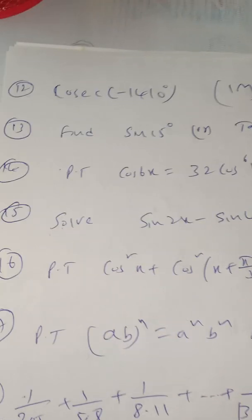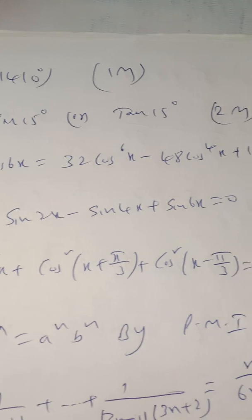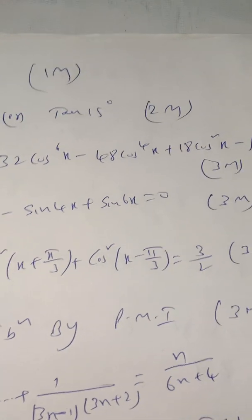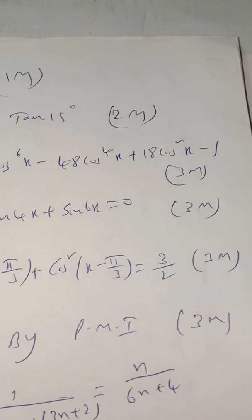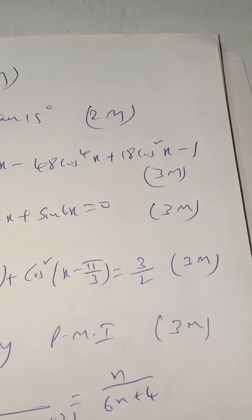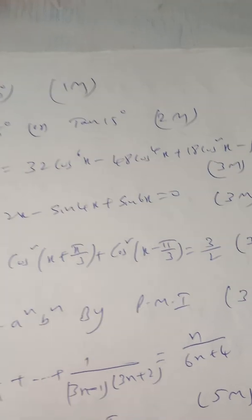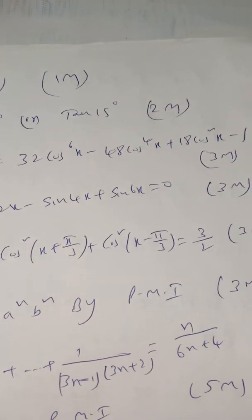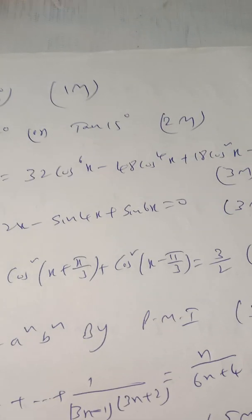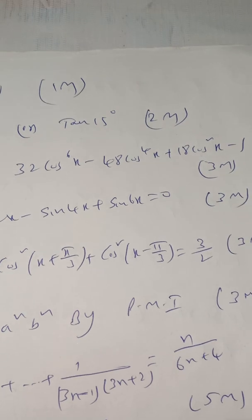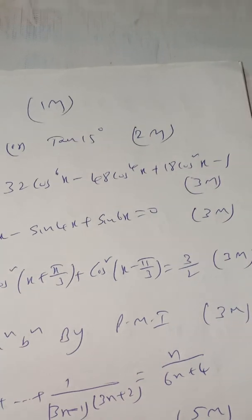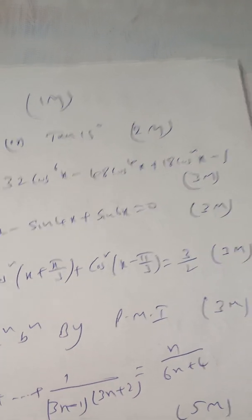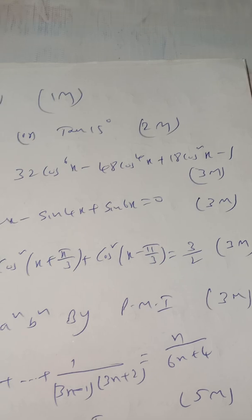Another 3-mark question in trigonometry: prove that cos 6x = 32cos⁶x − 48cos⁴x + 18cos²x − 1. The last 4–5 questions in the trigonometry chapter are very important. You can go through all of them.